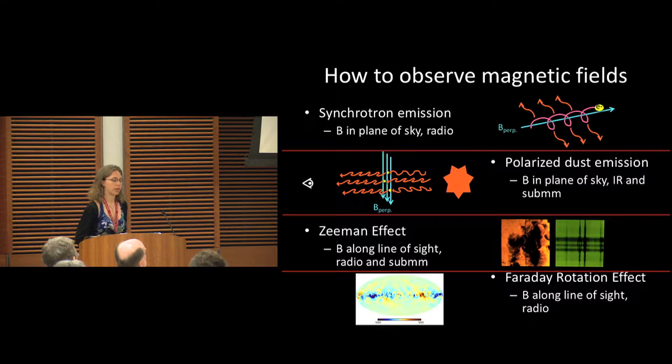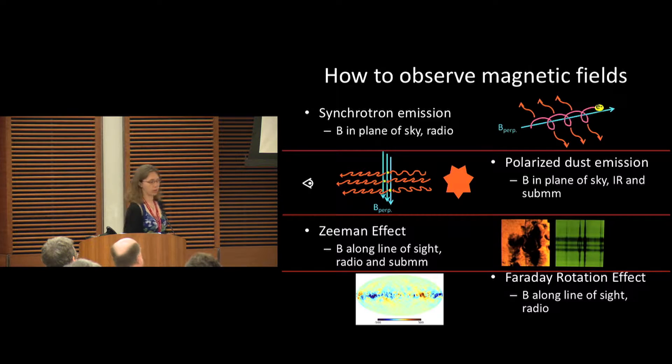The Zeeman effect is due to hyperfine structure splitting when you have a line-of-sight magnetic field. This is super powerful because you can get both the direction and the magnetic field strength directly from the spectral line information.